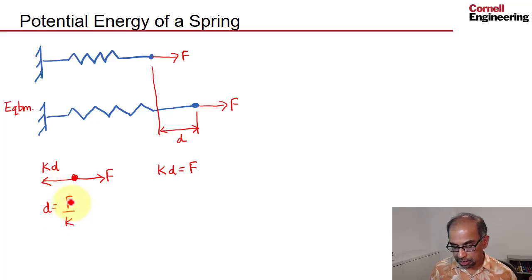Force balance indicates that at equilibrium, K*D should be equal to F, or D equal to F over K. So if I know what the force is and what the spring constant is, I can predict what the extension of the spring is. That's the equilibrium approach for the spring.